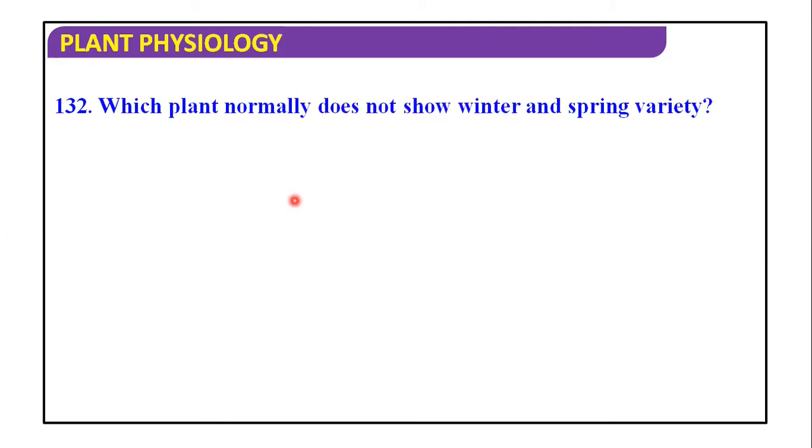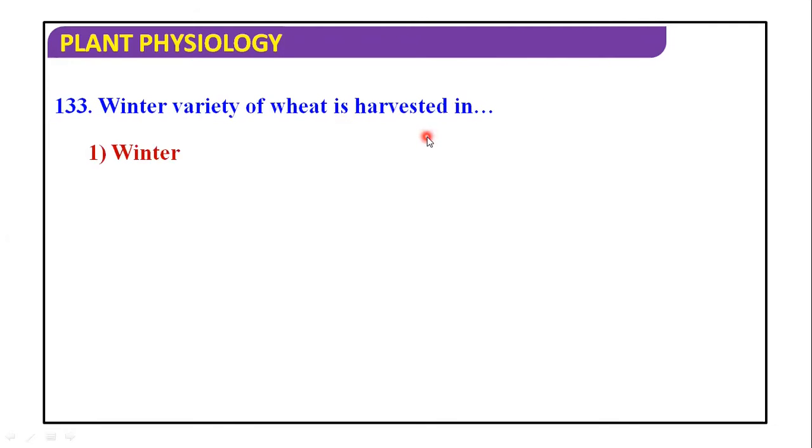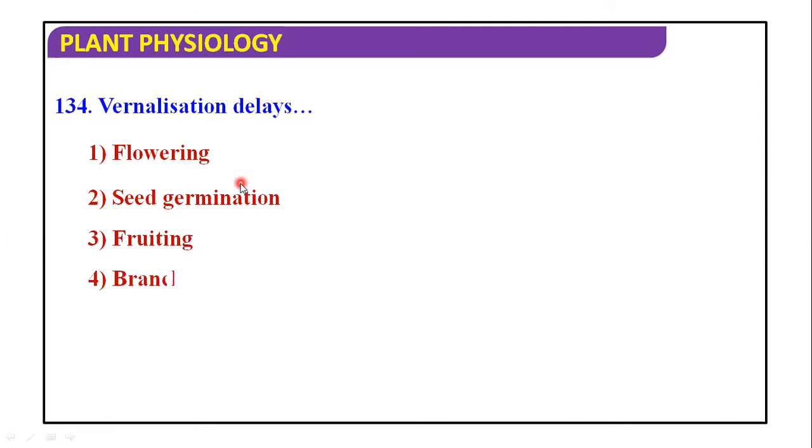Which plant normally does not show winter and spring variety? Answer options are wheat, barley, rye, rape and cabbage. Answer is cabbage plant normally does not show winter and spring. Winter variety of wheat is harvested in winter, so which wheat variety is harvested in winter? In the winter, in the summer, in the mid-summer or mid-winter? So answer is mid-summer. Vernalization delays flowering, seed germination, rooting or branching, and the answer is flowering, it will be delayed.